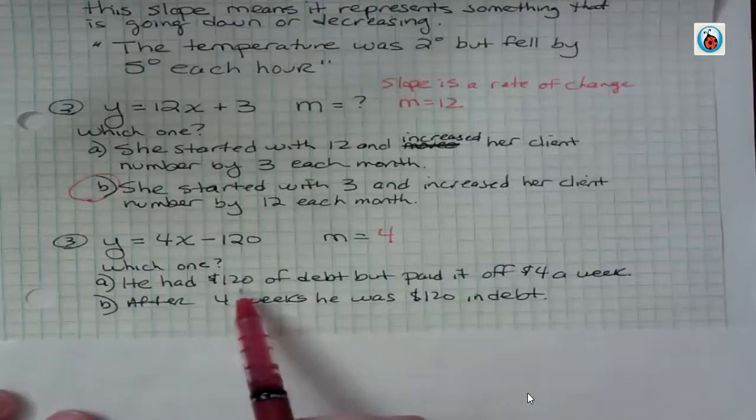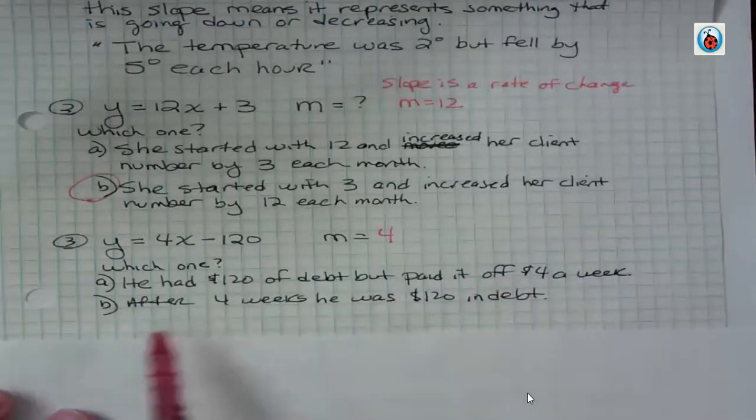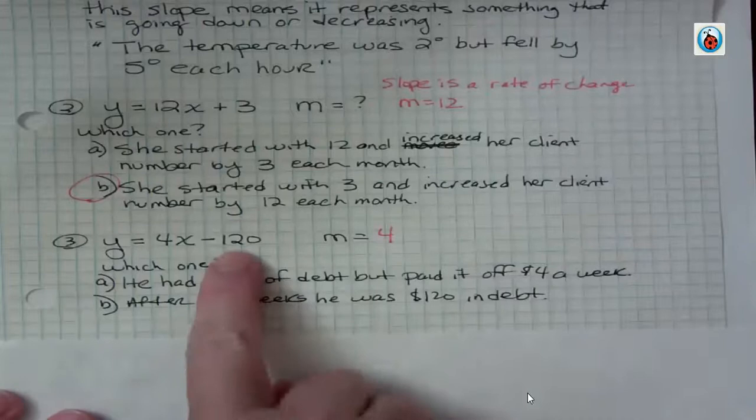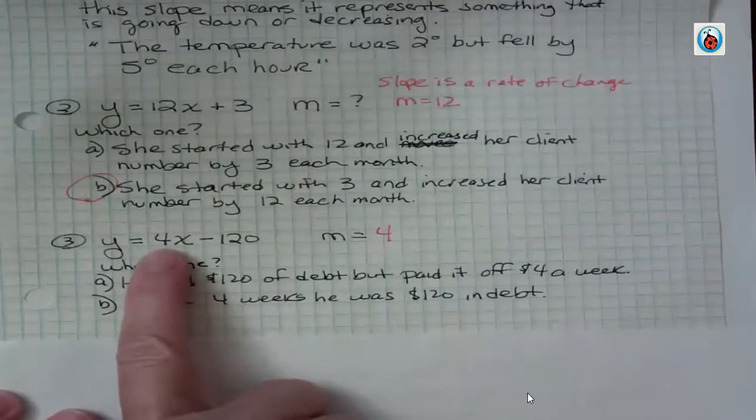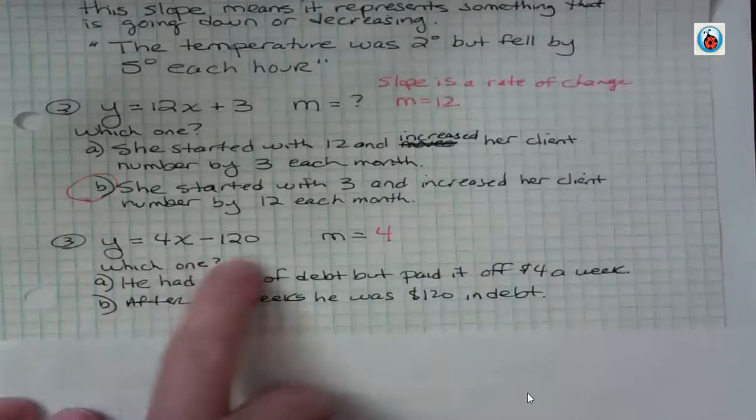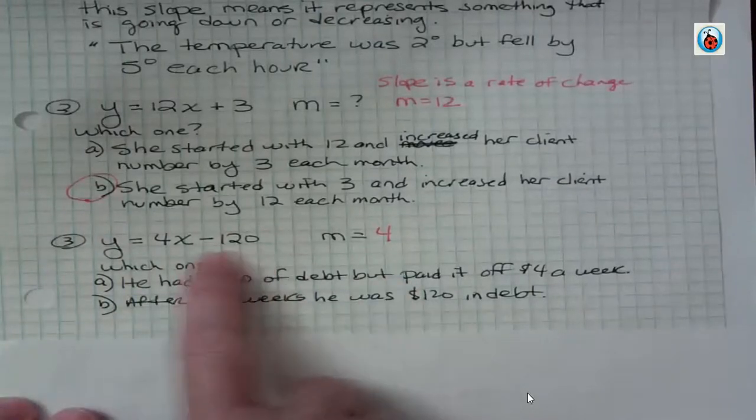He had $120 of debt but paid it off $4 a week. Or after 4 weeks, he was $120 in debt. Well, no. He started off at negative 120. So he had a debt of 120 to start with. He's coming out of debt because he's paying $4 every week. I'm just making up a scenario to go with this, but it makes sense. The starting point, he was actually in the hole to start with and he's coming out.